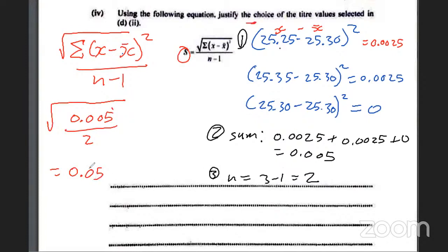The standard deviation is 0.05, which is extremely small. This means that the readings were precise — very close to each other. In a titration we use values that are very close. If the standard deviation were 1 or 1.5, those values would be considered high. The fact that it is 0.05 confirms the readings used are very precise.